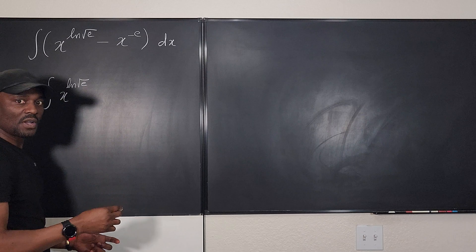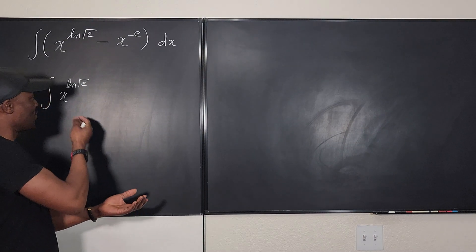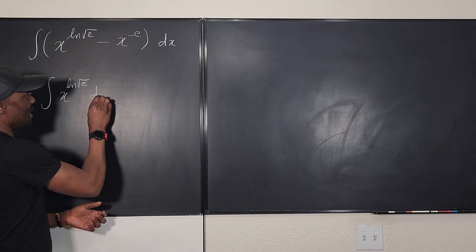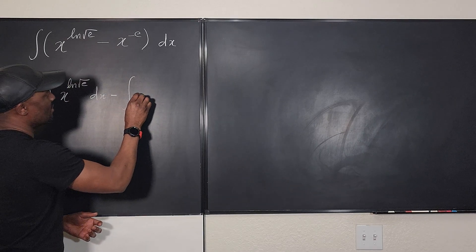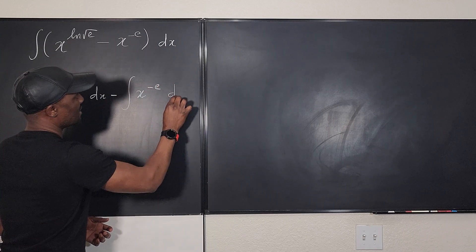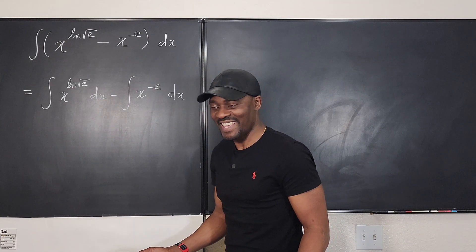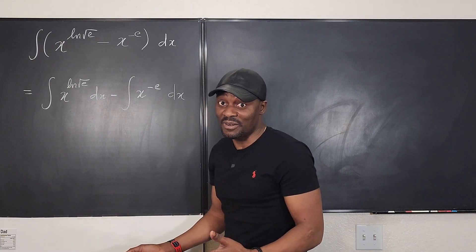You see, this is not a function. It's a number that you can put in your calculator and you get a number that you can put there. So it's the power rule. Minus the integral of X to the negative E DX. Negative E is also a number, so I don't need to worry about it. And it's not negative one. I know E is not one.